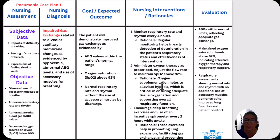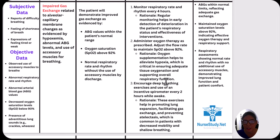Our nursing interventions and rationale: first, monitor the respiratory rate and rhythm every four hours. Regular monitoring helps detect early deterioration in the patient's status. Second, administer O2 therapy as prescribed, adjusting the flow rate to maintain O2 sat above 92%. Oxygen supplementation helps to alleviate hypoxemia and is critical to ensure adequate tissue oxygenation and support overall respiratory function. Third, encourage deep breathing exercises and use of the incentive spirometer at least every two hours while awake — some facilities may say every four hours, so follow your facility's guidelines. These exercises help promote lung expansion, facilitate gas exchange, and prevent atelectasis, which is common in patients with decreased mobility and shallow breathing.